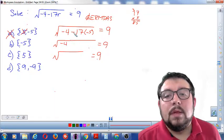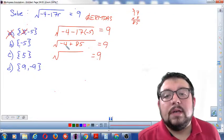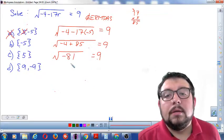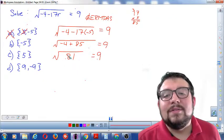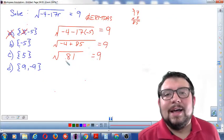Alright, so negative 4. Negative times negative makes positive and 17 times 5 is still 85. So now negative 4 and positive 85 combine to make negative 81. Or, I'm sorry, not negative 81. 85 is bigger so this should be positive 81. Now we're in business.